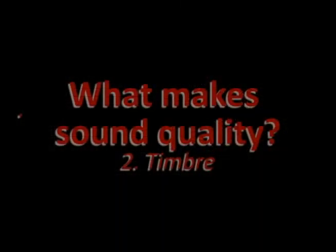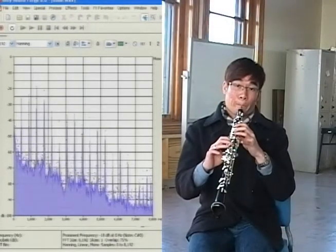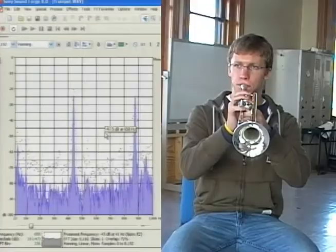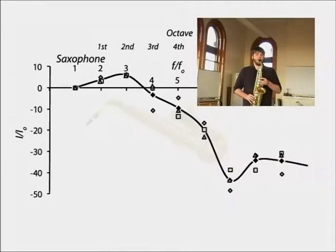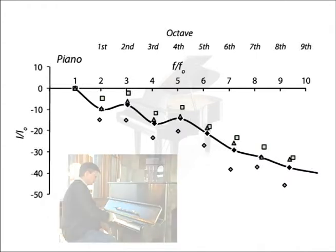The other important aspect of sound quality is timbre, T-I-M-B-R-E. This is what makes the piano sound different from the oboe, which sounds different from the trumpet, and so on. Timbre is a phenomenon of the overtones. We can see this by graphing the sound intensity of each of the overtones for each instrument. To make the comparison easier, we plot the overtones' sound intensity relative to the fundamental tone, versus the overtones' frequency relative to the fundamental's frequency.